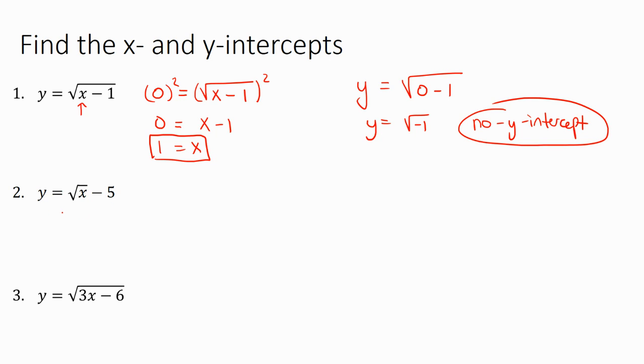Number 2. If I start with the x-intercept plug in 0 for y. Since this minus 5 is outside the square root I can add 5 to the left. And then to undo the square root I just square it, raise it to the second power so we get 25 equals x.